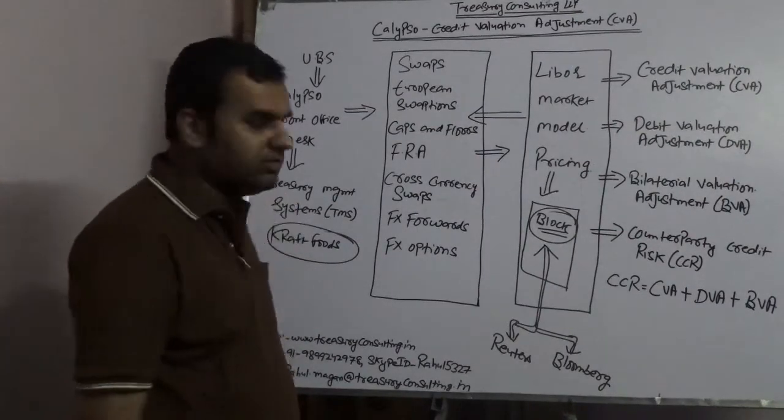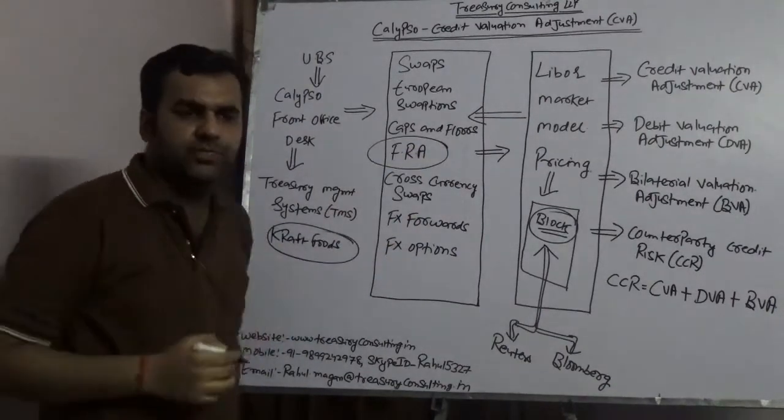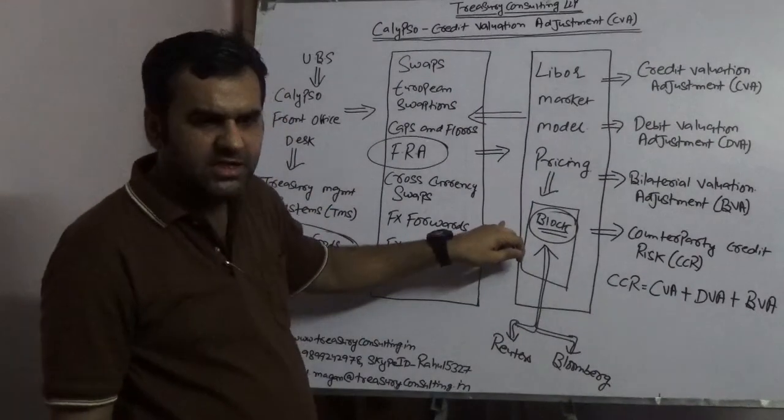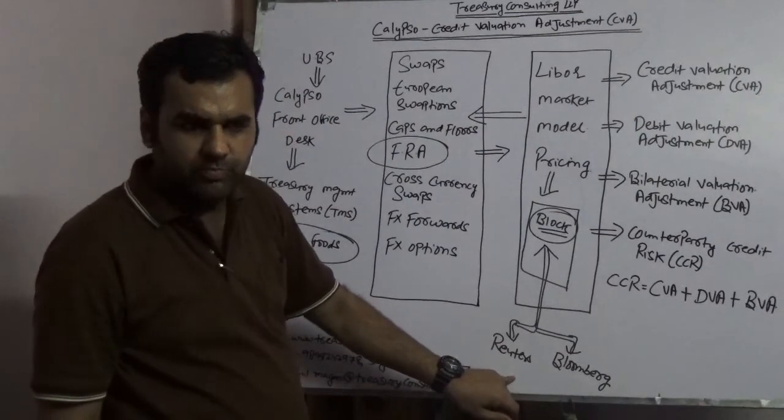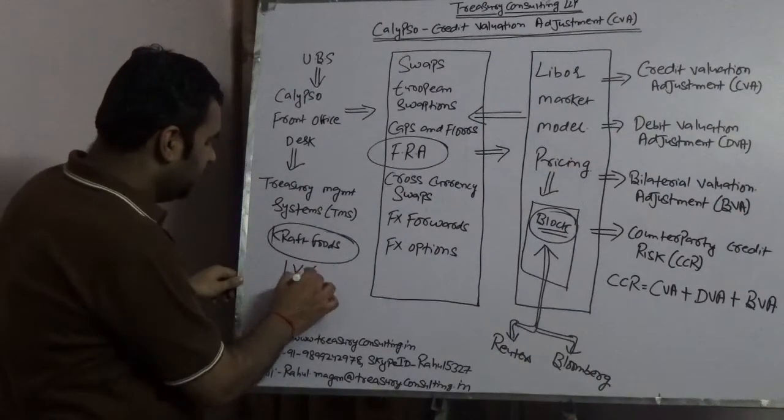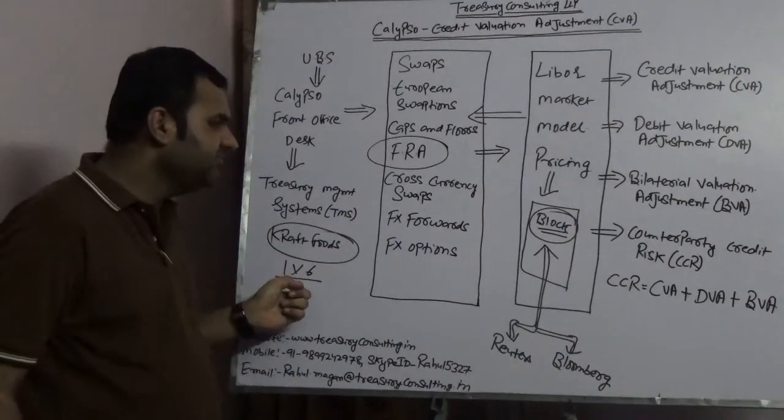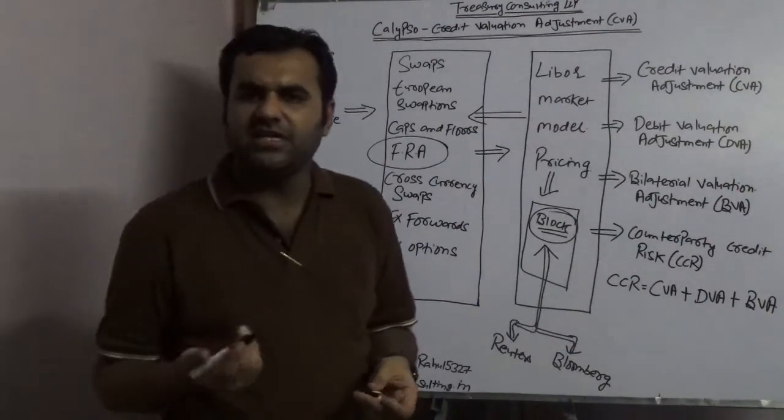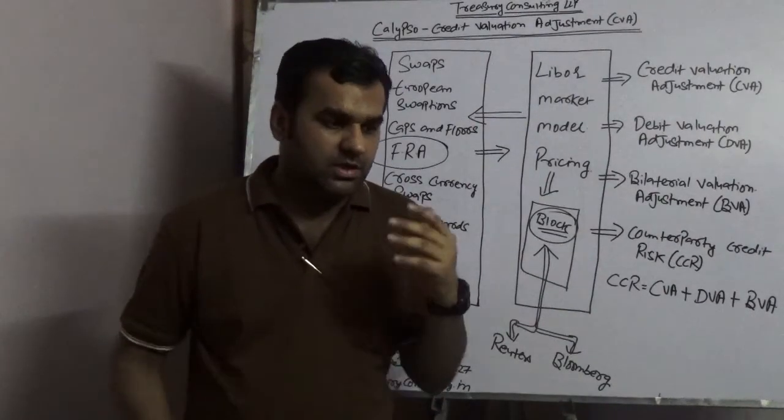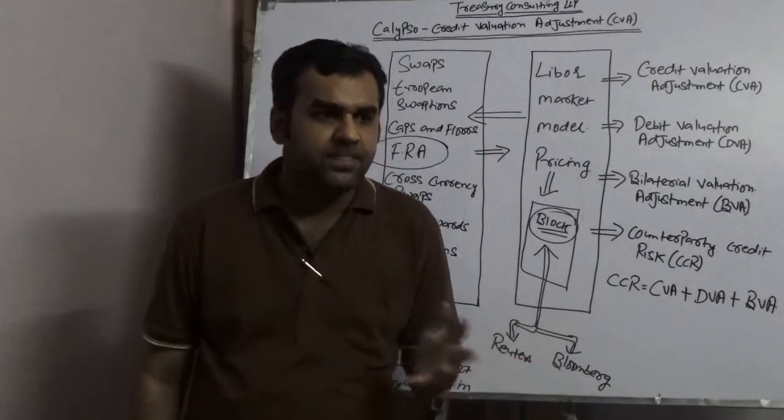What is CVA? Take a simple example: UBS is dealing with a client, say Kraft Foods. UBS is dealing with Kraft Foods, the largest food company in Europe. Kraft Foods is taking an FRA, a forward rate agreement, with UBS, and UBS has Calypso. The UBS trader goes into the pricer, and the pricer is getting a feed from either Reuters or Bloomberg.